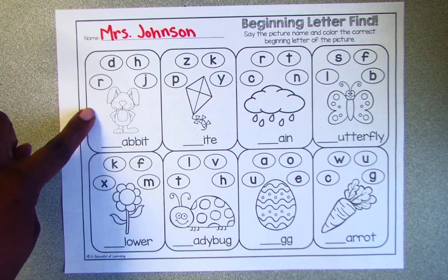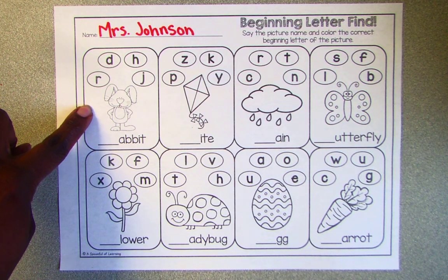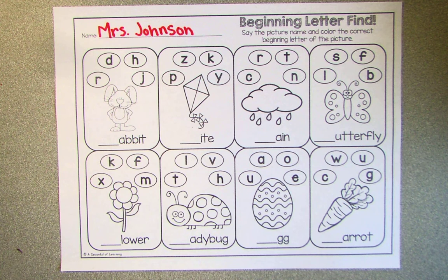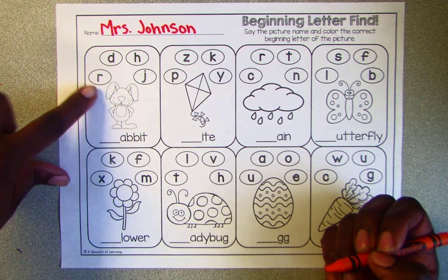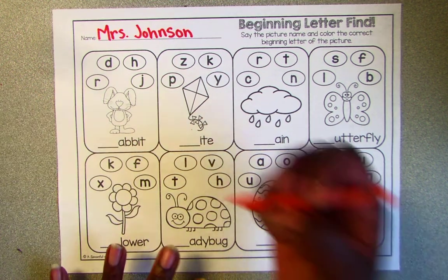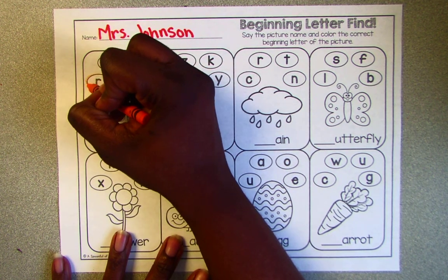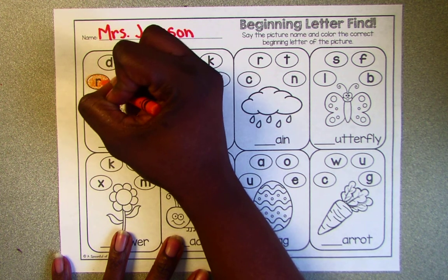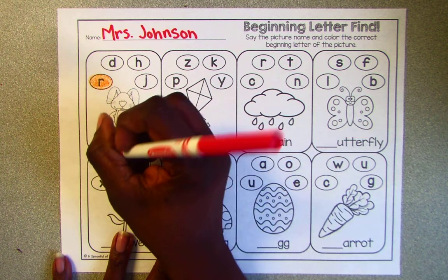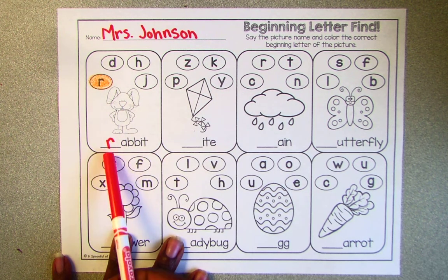So put your finger on the box with the rabbit. What does rabbit begin with? Rabbit. I'll give you time to think about what letter sound makes the UR in rabbit. Okay, so if you said R, you're correct because R makes the UR sound. So we're gonna color in the letter R, and we'll write the letter R in the blank for RABBIT.